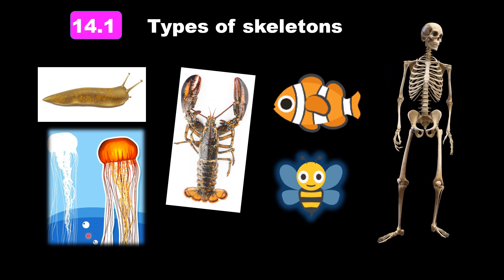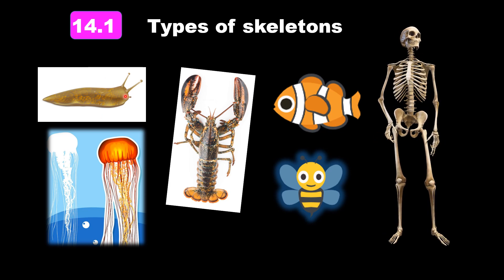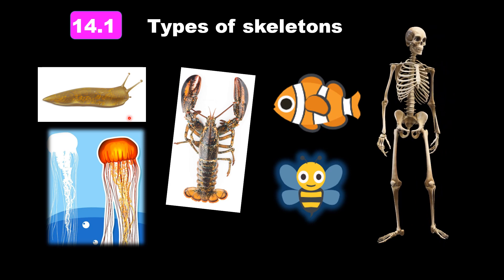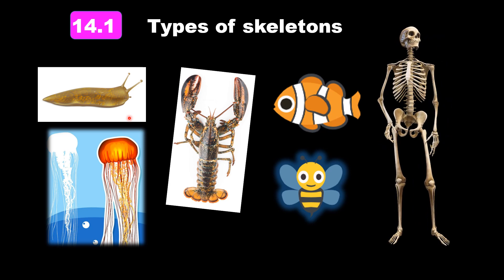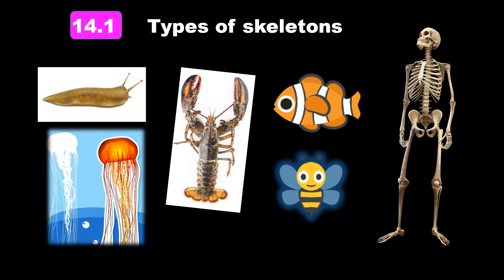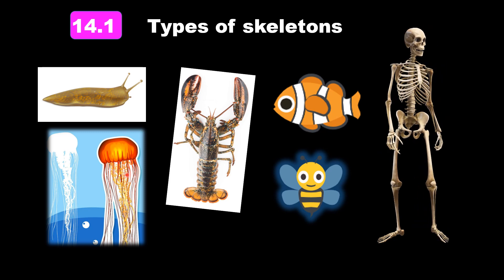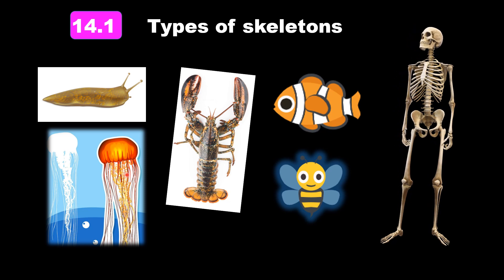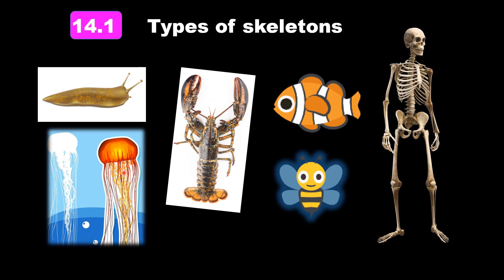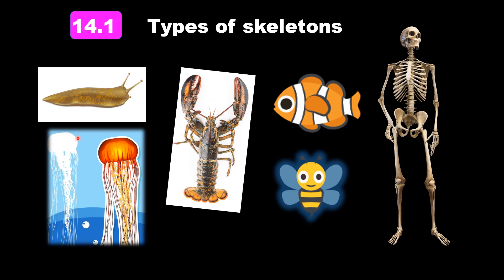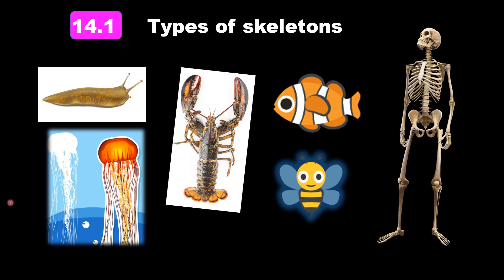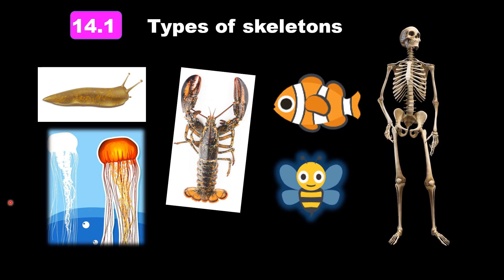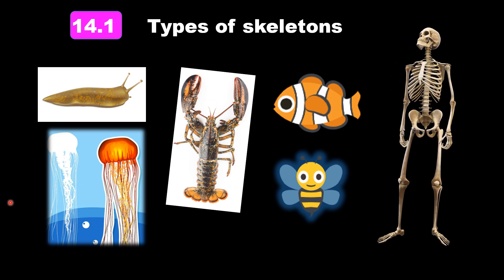Now how about these two organisms here? It is like a snail, but it does not have a shell — this is called a slug. So the slug and the jellyfish, do they have any skeletons? Yes, they do. They have the hydrostatic skeleton. So let's find out more about the characteristics of the three types of skeletons so that we'll be able to identify what type of skeleton an organism has.